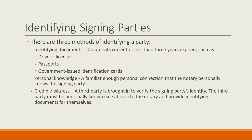The most important function of a notary public is to confirm the identity of an individual signing a document. Historically, this was one of the original purposes for the notary public profession. By confirming the signing party's identity, the notary is confirming that the signing party is who they say they are, and that they are doing so of their own free will, which we will discuss momentarily. There are three ways to identify a signing party: by using identifying documents, personal knowledge, or by a credible witness.